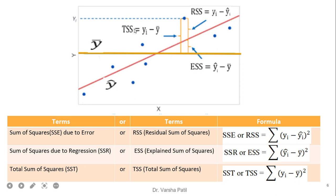Now, this is very important to understand this diagram. Here, X is the independent variable and Y is the dependent variable. This is nothing but the average of training records, that is Y-dash. And here, this is the line of regression. When we draw the regression line and if our data is highly correlated, then we get the data most of the time close to the regression line. Now, we require to understand three important terms — three differences can be possible.